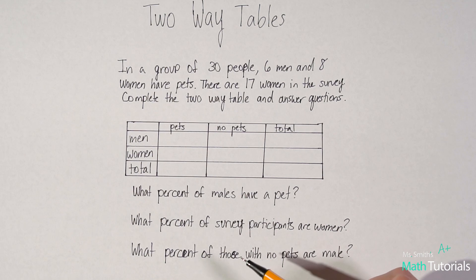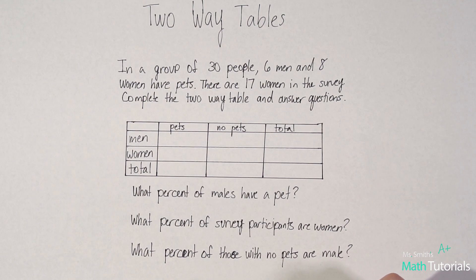In a group of 30 people, so 30 people total, six men and eight women have pets. There are 17 women in the survey. Complete the two-way table and answer questions.